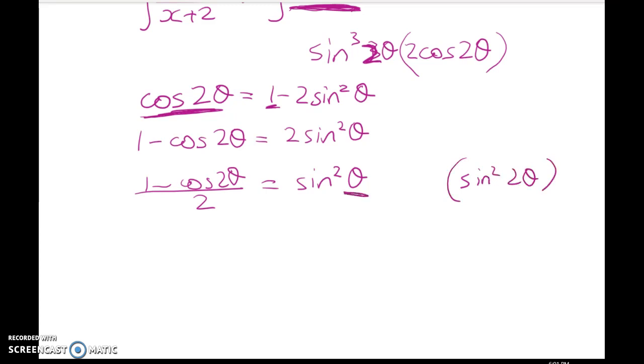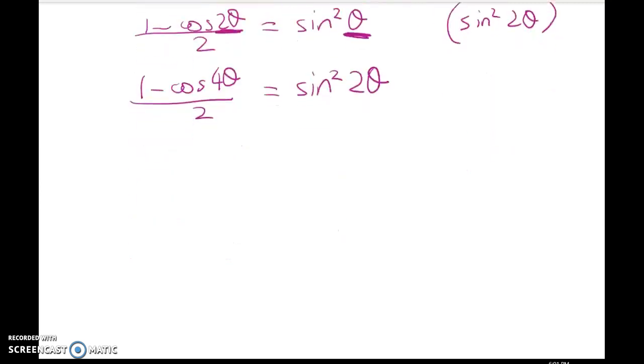So what we have to do here is double theta here and double it over here. So we need 1 minus cos of 4 theta over 2 is equal to sin squared of 2 theta. Now we're going to take that and we're going to substitute that back in to the integral.